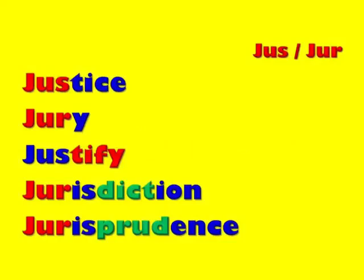Justice is a noun meaning basically the implementation of law. A jury is a group of people that decides the law. To justify something is to show that it is lawful — by justifying it, we're showing that it has to do with or goes by law. Jurisdiction is a word that contains two roots: jure and dict. Dict means to write, so jurisdiction is basically that which is lawfully written — if you are within someone's jurisdiction, you are within their written law. Jurisprudence also contains two root words; prude is a root word meaning knowledge or common sense, so jurisprudence is knowledge of law.